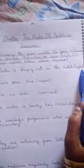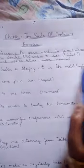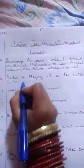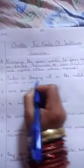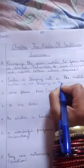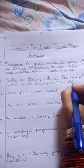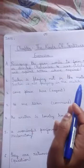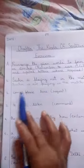The given words are: Sachin is playing not in the match. The instruction says we have to change this sentence in a negative way. So we are going to write: Sachin is not playing in the match. We have rearranged this group of words and transformed them into a negative sentence.